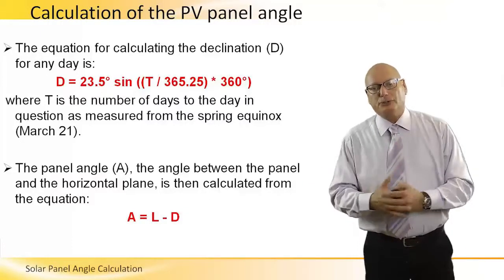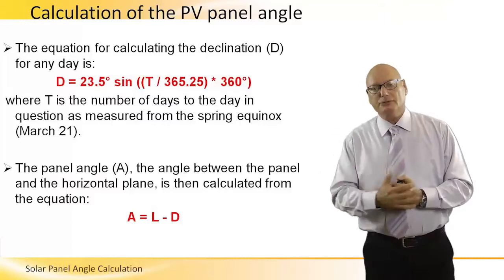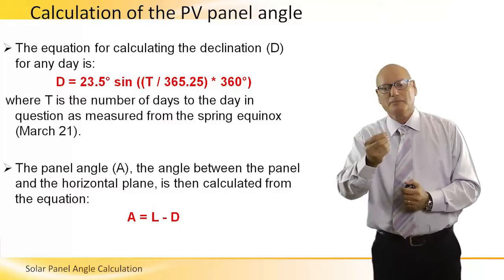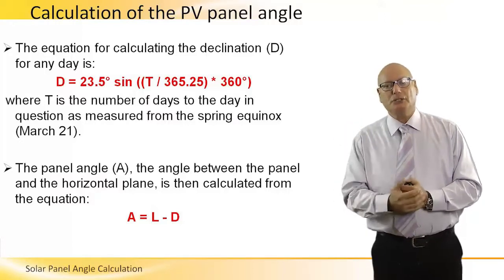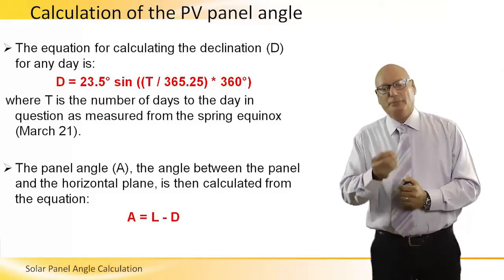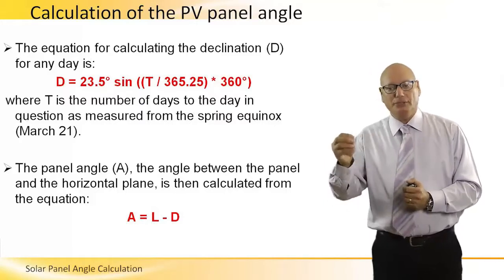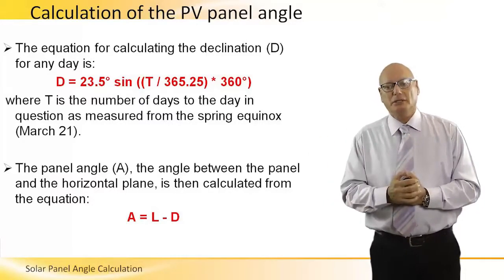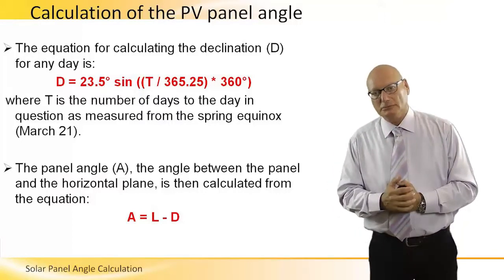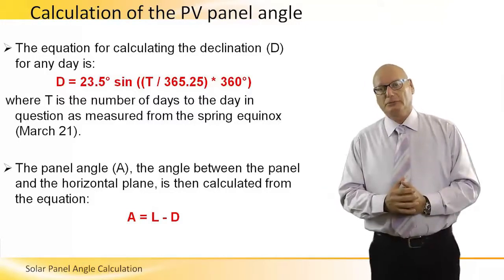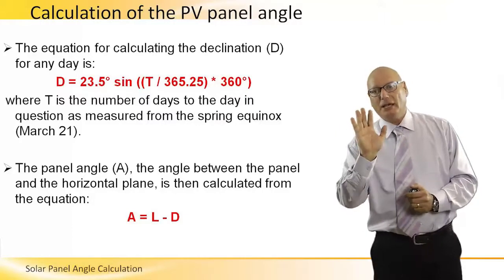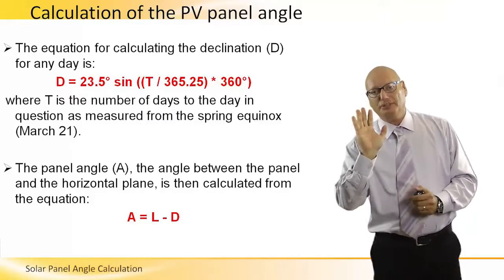The equation for calculating the declination is the formula in front of you, where T is the number of days to the day in question as measured from the spring equinox, March 21st. The panel angle — the angle between the panel and the horizontal plane — is then calculated from the equation A equals L minus D. So no matter where you are on Earth, you can easily calculate the angle at which the panel has to be in order to look perpendicular to the Sun.